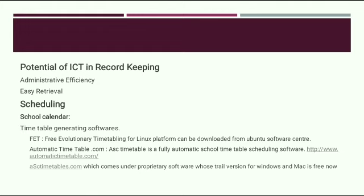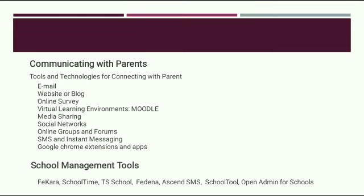For school scheduling and calendars, there are software tools available. The first is FET (Free Evolutionary Timetabling), which can be installed on Ubuntu Linux. The second is automatic-timetable.com — ASC Timetable, a fully automated school timetable scheduling software, with links provided. Another proprietary software has a trial version available for Windows and Mac. These are free or trial software tools used for generating school timetables.